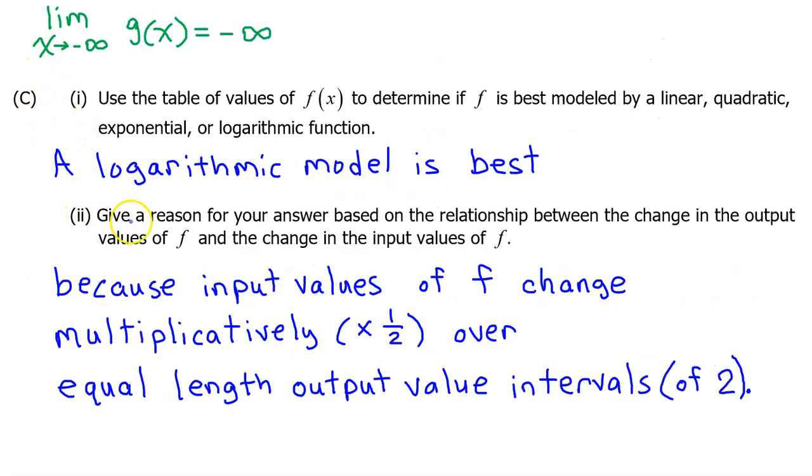C part 2 just says give a reason for your answer. So I'm going to answer C part 1 and part 2 all at once. A logarithmic model is best because input values of F change multiplicatively times 1 half over equal length output value intervals of 2. Or if you don't like the phrase change multiplicatively, you could say because input values of F are proportional times 1 half over equal length output value intervals of 2.